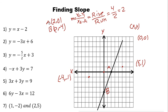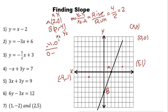We can also use the formula directly. Let's call point A as (X1, Y1) = (2, 0) and point B as (X2, Y2) = (0, −4). So slope = (Y2 − Y1) / (X2 − X1) = (−4 − 0) / (0 − 2) = −4 / −2 = 2. The slope of this line is 2.